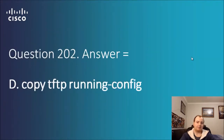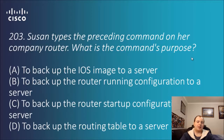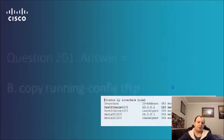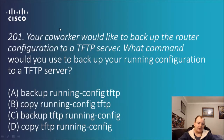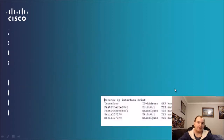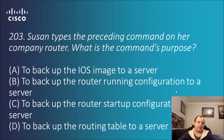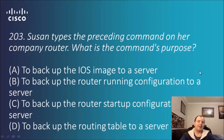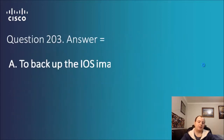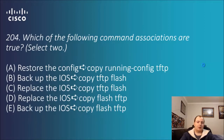Question 203: Susan types the preceding command on her company router. What is the command's purpose? The options are: to back up the IOS image to a server, to back up the router running configuration to the server, to back up the router startup configuration to the server, or to back up the routing table to the server. That initial command was doing A: backing up the IOS to a server.